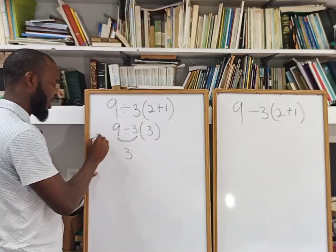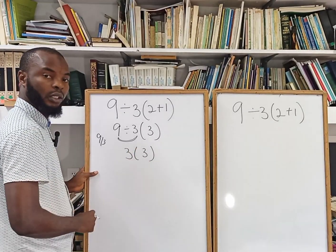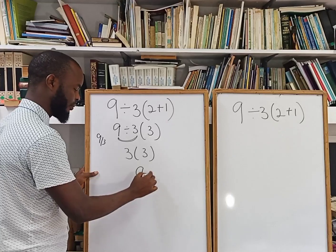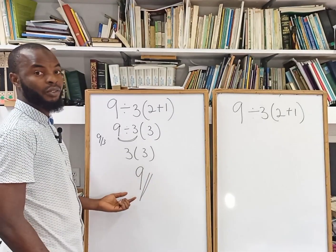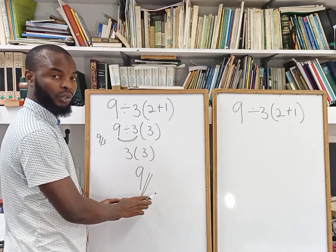Just solve 9 over 3 gives 3 into bracket 3. 3 multiplied by 3 gives 9. That's the first solution. I've seen a lot of professors solving this question using this approach.